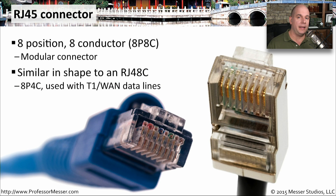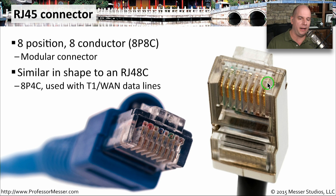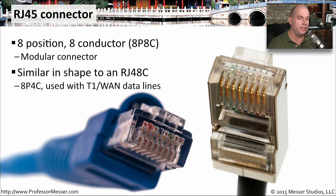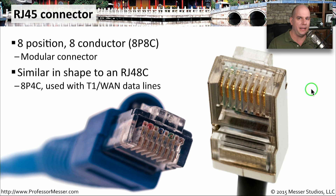For most of our ethernet connections, we're using an RJ45 connector. This is a little bit wider than the RJ11 — it's an eight position, eight conductor cable connector. You'll see all eight copper connections on the end of the connector being used for ethernet. This is also a very similar shape to something called an RJ48C, which is used for T1 or WAN type lines. The cabling inside may differ, so it's common to check how they're wired.